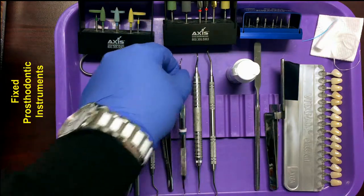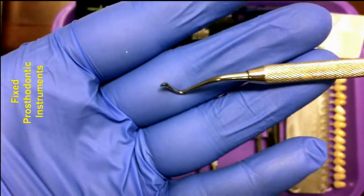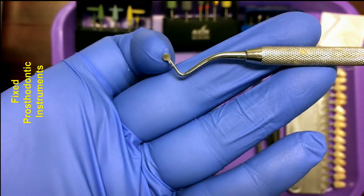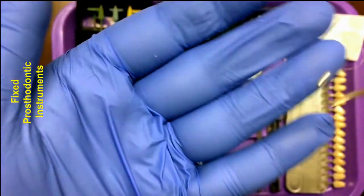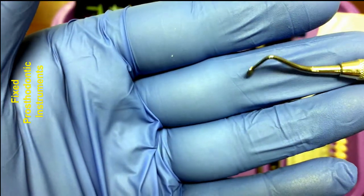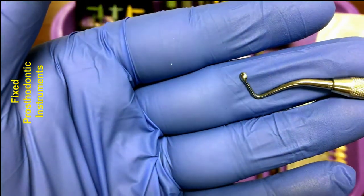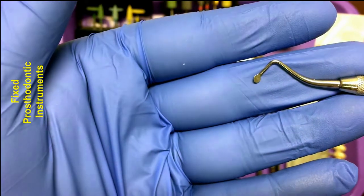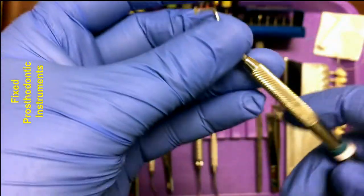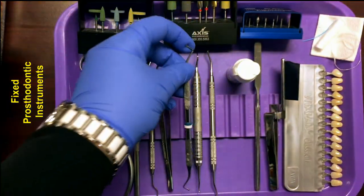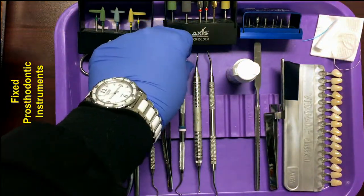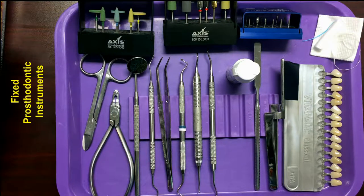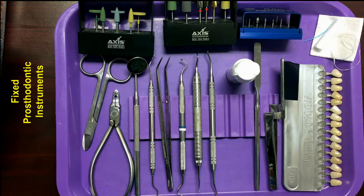Then we have a spoon excavator. The spoon excavator has a round spoon-shaped end on each side. It is used to remove soft debris, such as carious dentin. On this setup, it can serve multiple purposes. A lot of times the operator may use a spoon excavator to place cement on the inside portion of the crown or bridge abutments, somewhere where the cement spatula might be too large to reach.